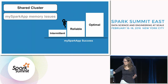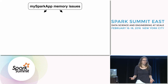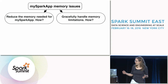Those are some considerations for the shared cluster. Next we'll talk about memory issues. Spark is a memory hog — you're going to run into out-of-memory issues, it's just a fact of life. The way I see it, you can approach this problem two ways: on the left-hand side, reduce the amount of memory needed for your Spark application; or on the right-hand side, gracefully handle your memory limitations.